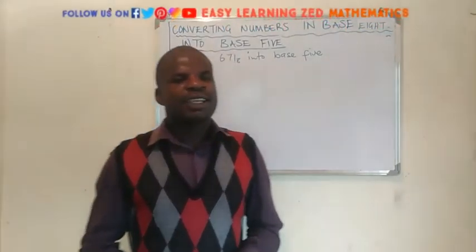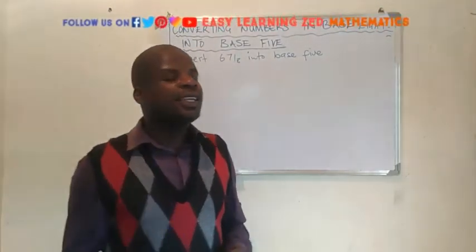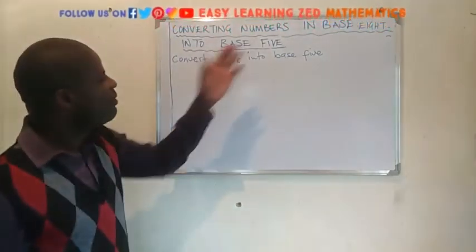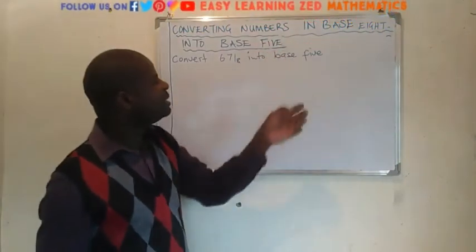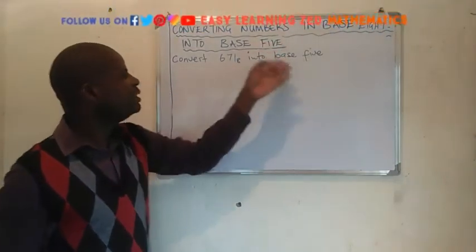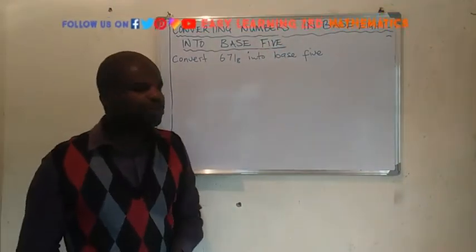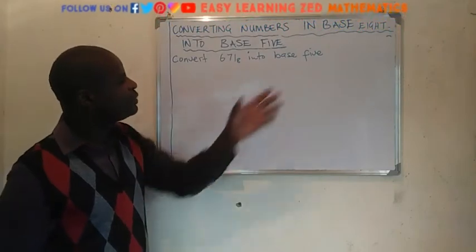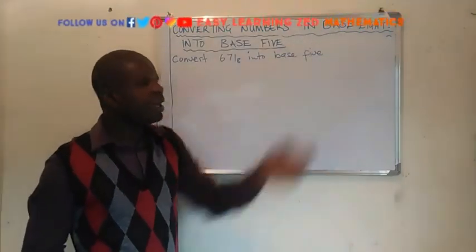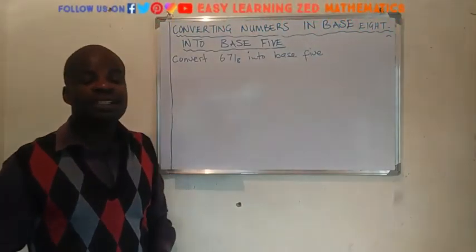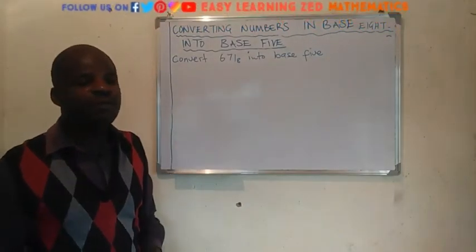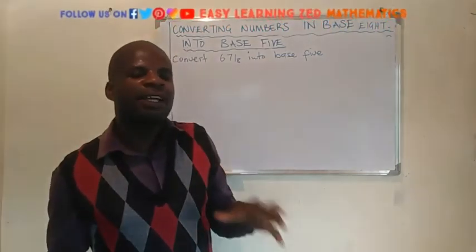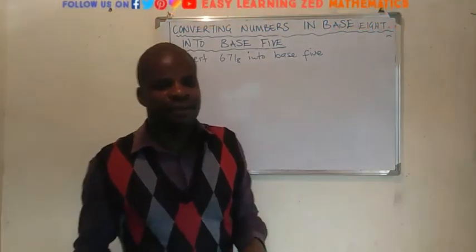Welcome to today's lesson. In this lesson, we are going to convert numbers in base 8 into base 5. Basically what we are going to do is, first we are going to convert the number in base 8 into base 10. Then thereafter, we are going to convert that number into base 5.